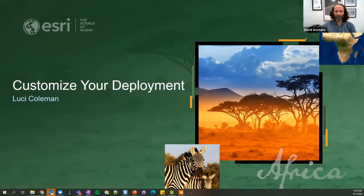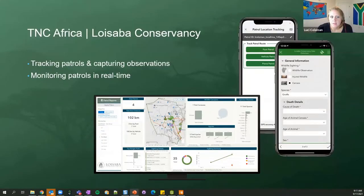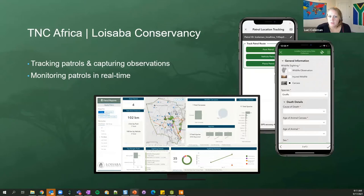Next, Lucy Coleman will discuss advanced customizations for the ArcGIS solutions for conservation. She has been working with two organizations through professional services engagements, but everything shown is configurable independently. The Los Lava team started by deploying the PAM solutions but quickly realized they needed to track many more metrics. Together, they combined several PAM surveys, added additional questions, and incorporated a patrol tracking capability to configure a custom dashboard.